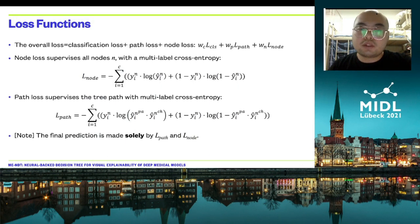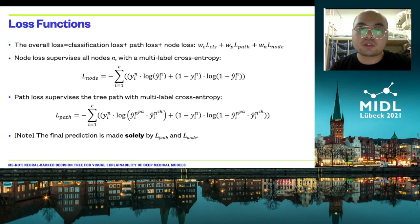The proposed MENDT is trained with three losses: the standard classification loss that classifies the disease, and the path and node losses. The node loss supervises all the nodes with a multi-label cross-entropy, and the path and node loss finds the tree paths that lead to the predicted disease, again with a multi-label cross-entropy. Note that the classification loss is only used to accelerate convergence and improve performance, but it does not participate in the final decision.